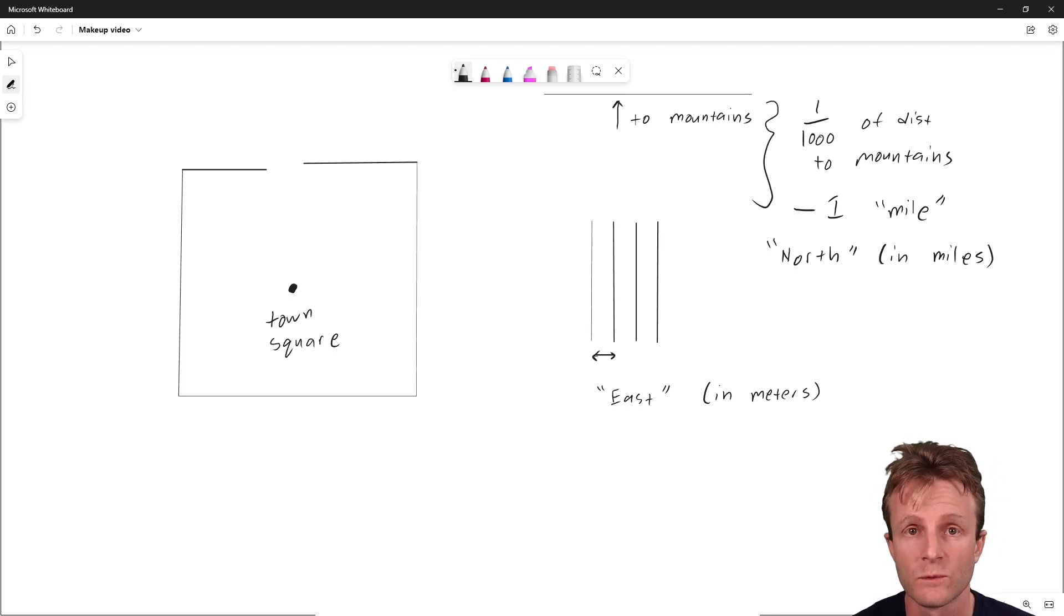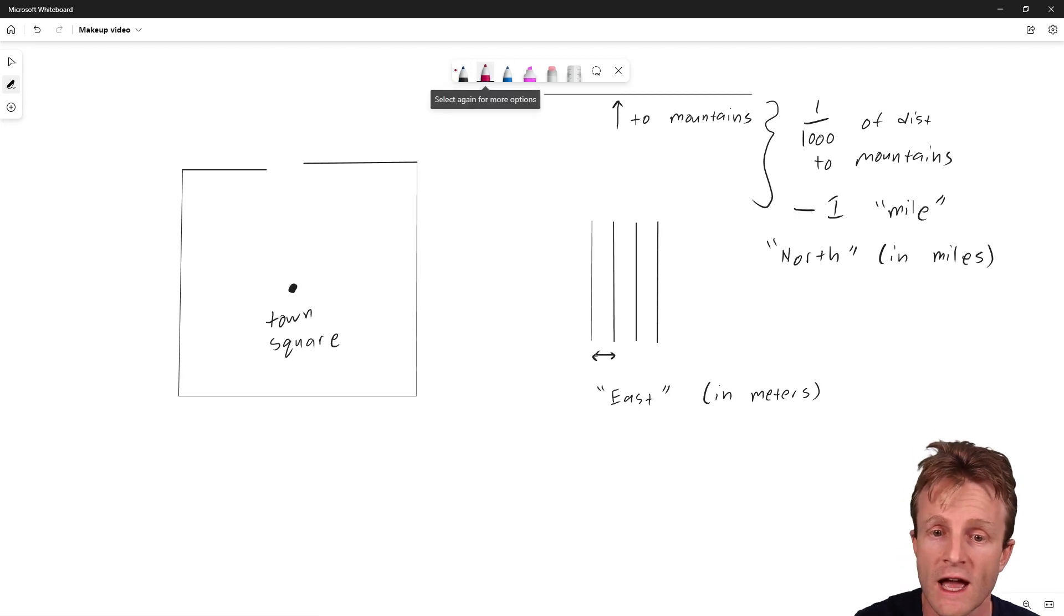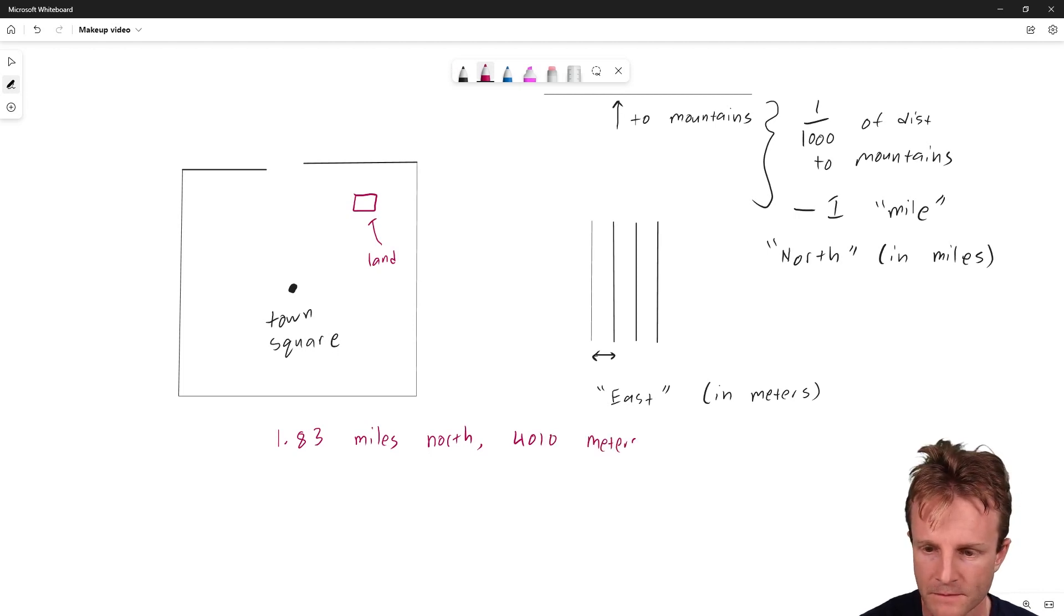And east is going from one little ridge to the other. And of course, that's measured in meters. That's certainly the most sensible unit for east. And so when the residents of this town keep track of things like where a piece of land is, what its boundaries are, so everyone can agree on who owns what and so forth, they just list how far north it is and how far east it is, and everything starts at the town square. And so this particular piece of land has a certain measurement, and let's suppose that it was 1.83 miles north and 4,010 meters east.